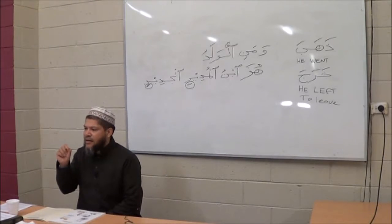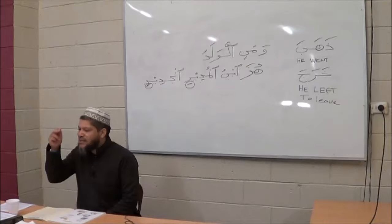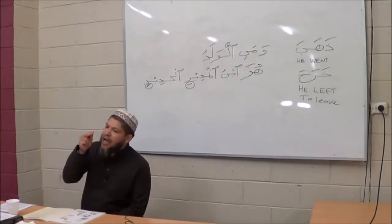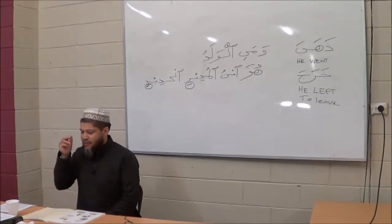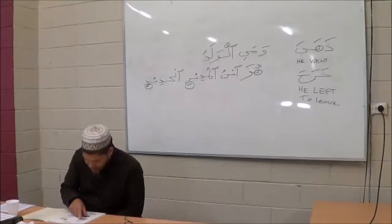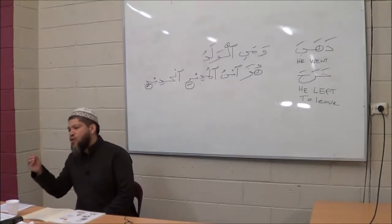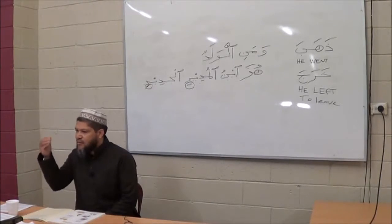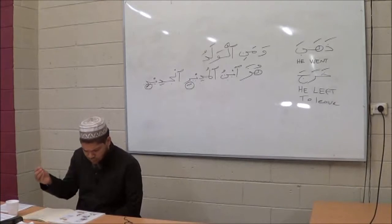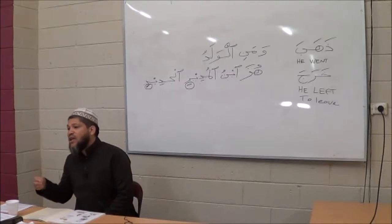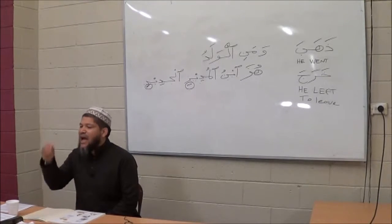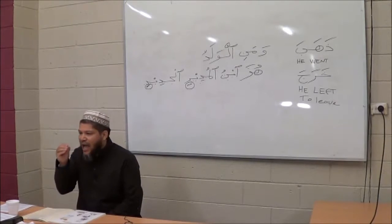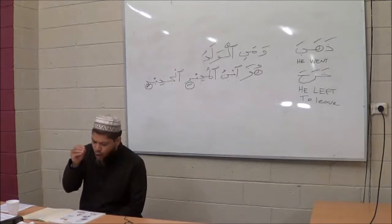Let's look at the next word: Kitabun. When I want to say 'the book,' it becomes Al-kitabu. Next, Jamalun — Jamalun is a camel. When I want to say 'the camel,' it becomes Al-jamalu.